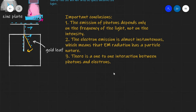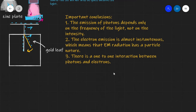Let's summarize three important conclusions from the gold leaf experiment. Number one: the emission of photoelectrons depends only on the frequency of the EM radiation, not on the intensity. Number two: the electron emission is almost instantaneous, which means EM radiation must have a particulate nature. Finally, number three: there is a one-to-one interaction between photons and electrons.